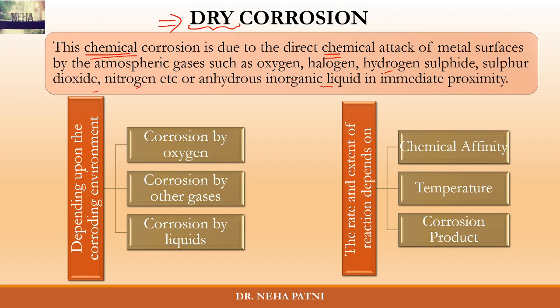If a liquid is present, it has to be anhydrous, meaning it should not have moisture. This type of corrosion occurs depending on the environment: first, it could occur in the presence of oxygen gas — that's oxidation corrosion; second, it could happen in the presence of other gases like halogens, H₂S, etc.; and third, it could happen in the presence of anhydrous liquids where there is no moisture at all.